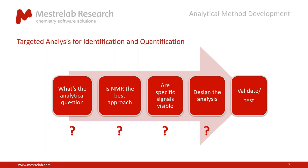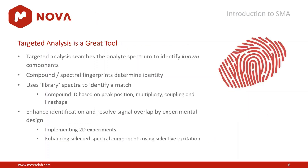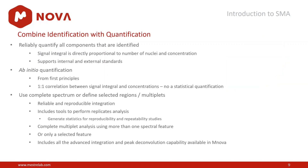One word of caution about targeted analysis: you should ask yourself whether NMR is the suitable technique for your analysis. If it is, and provided that you can see the signals of interest, then you can design an analysis, validate it, and test it within the workflow. Pablo is going to show the workflow with 1D NMR spectra — probably proton — but it can be used for any other nuclei as well. We are also implementing 2D experiments in the latest version of SMA for situations where you need more resolution.